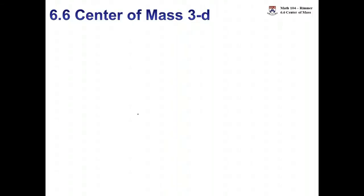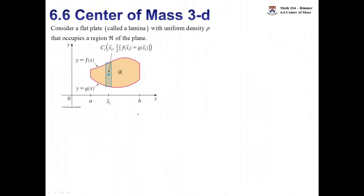Now let's look at the concept of center of mass in three dimensions. We need to consider a flat plate called a lamina where we have the density of the plate uniform. The density would be some constant, that's the Greek letter rho, and it's going to occupy some region in the xy plane. So this is some thin film and we want to be able to find the center of mass of this three dimensional shape.